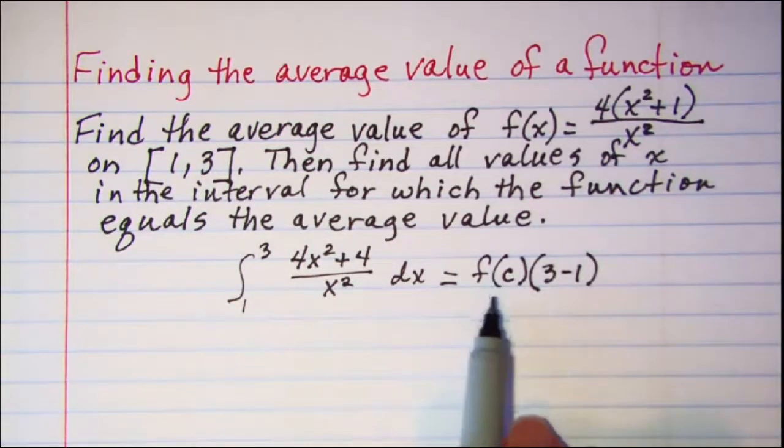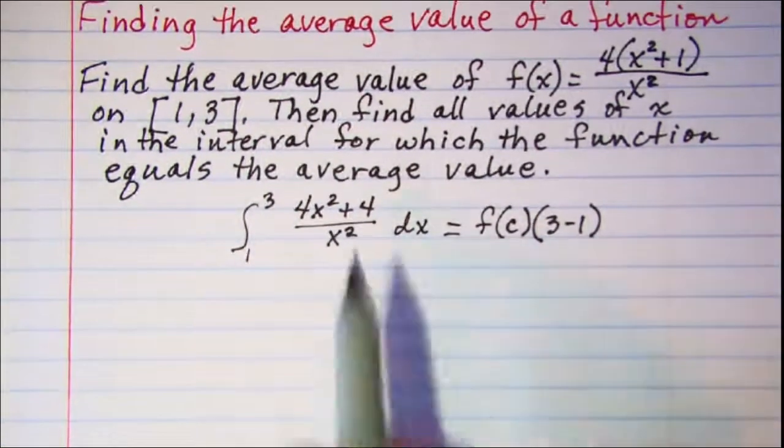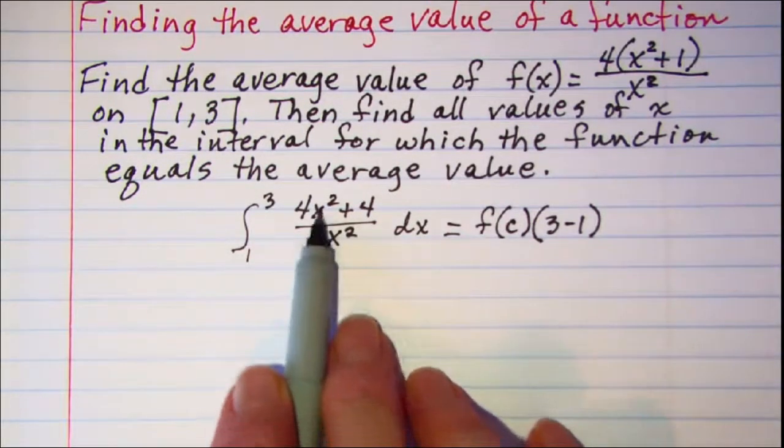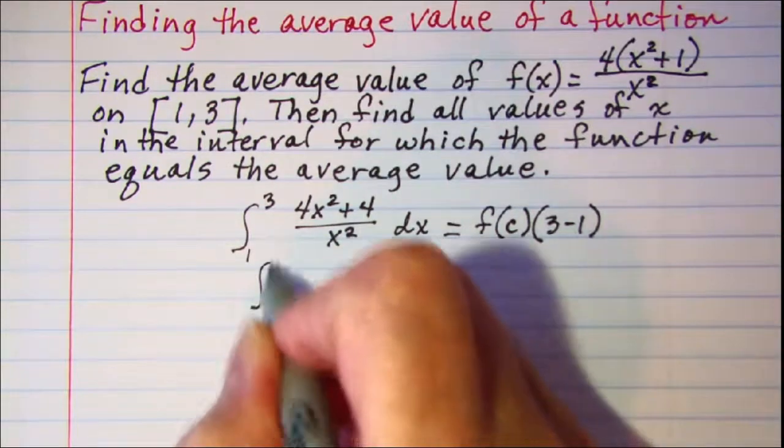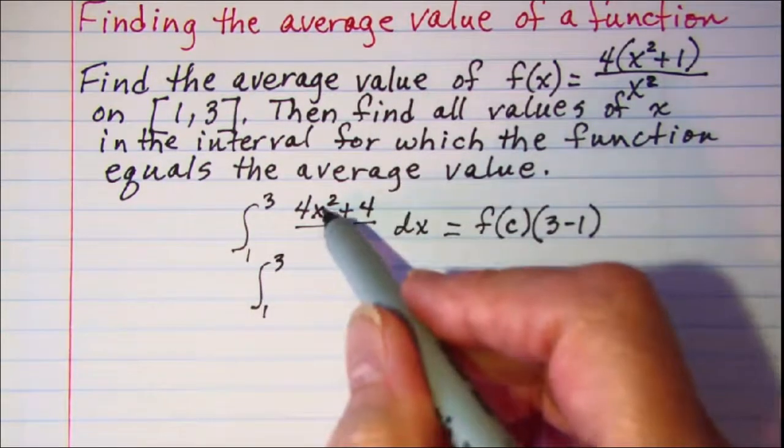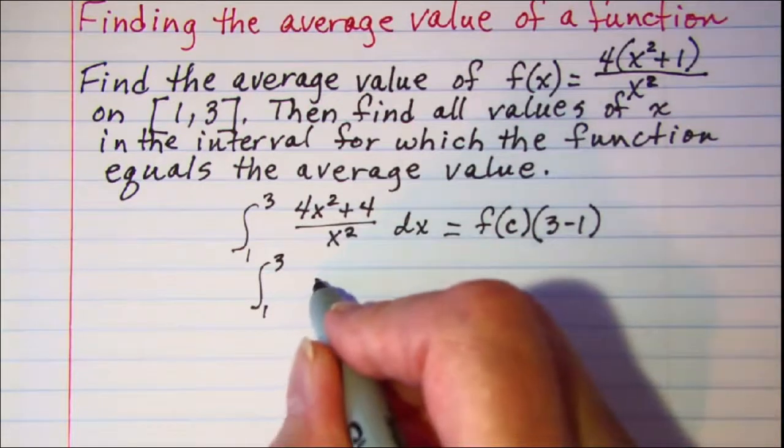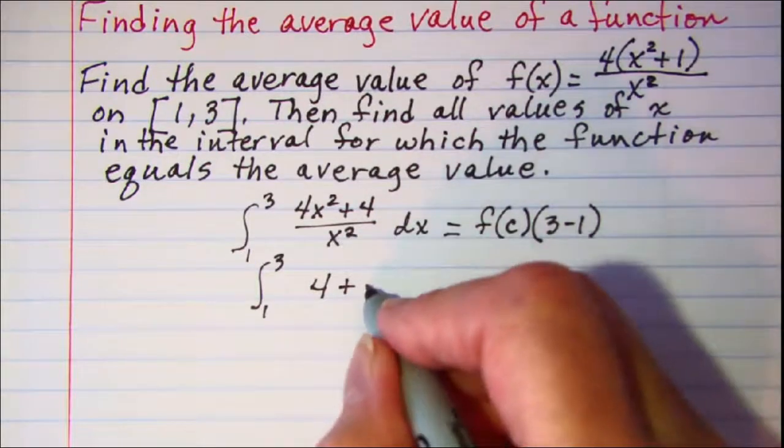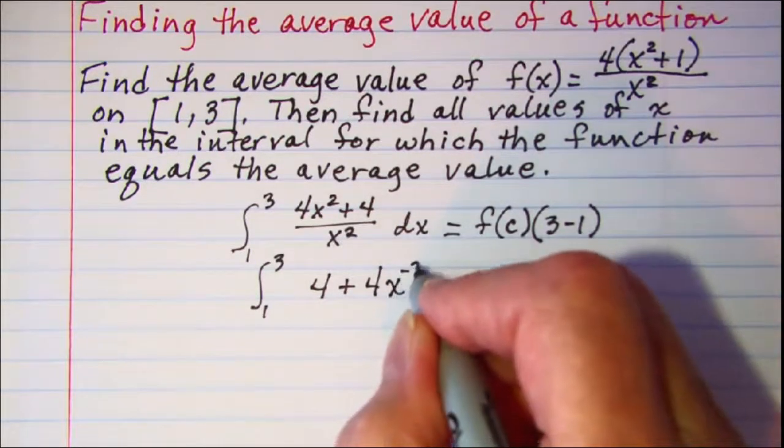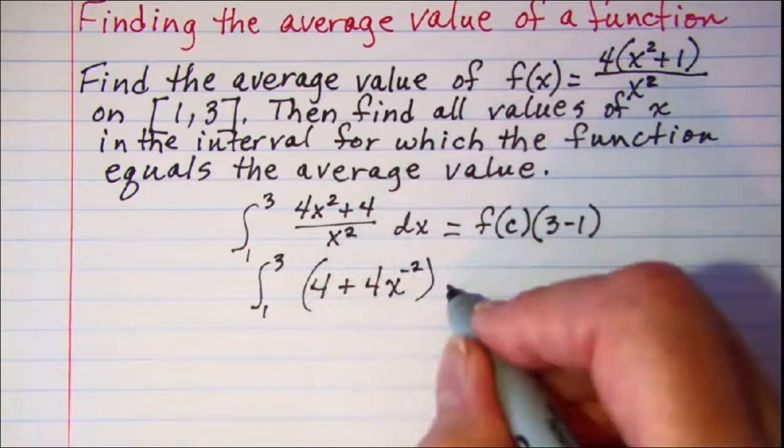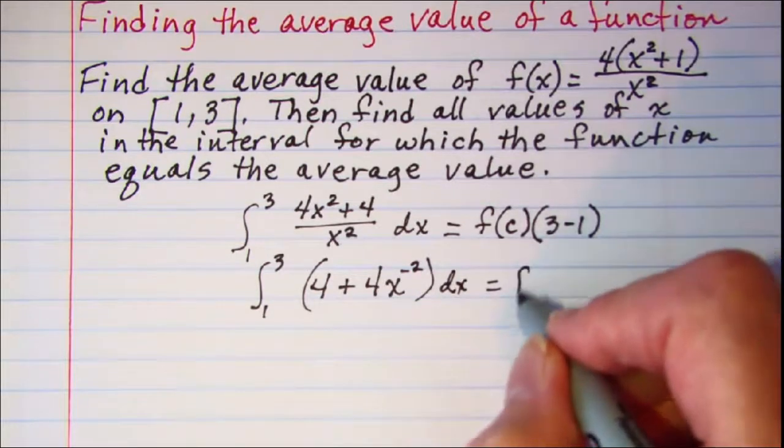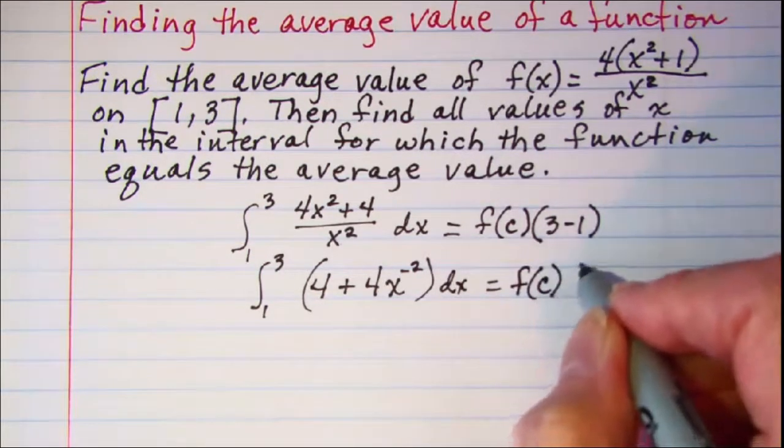My average value then is this f of c factor right here. So we need to integrate on the left side. I'm going to simplify this a little bit, write this as 4x squared over x squared which is just 4 plus and then 4 over x squared I can write as 4x to the negative 2. So that's my expression that I need to integrate and let me just copy here on the right side. That's f of c times 2.